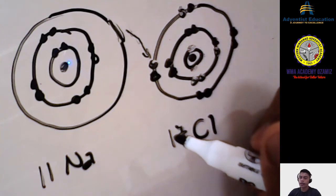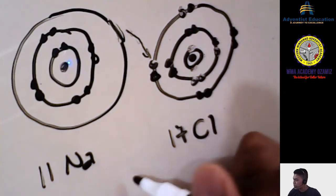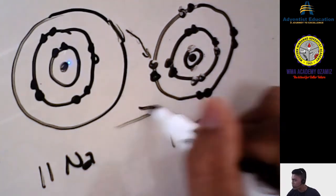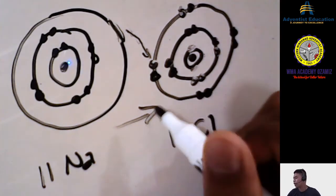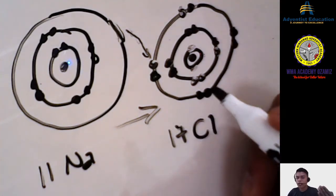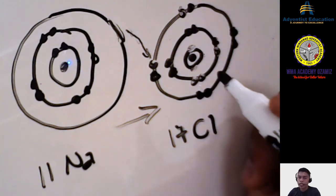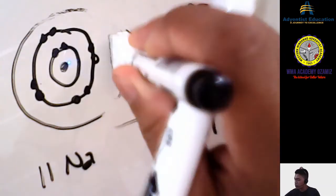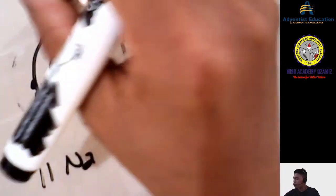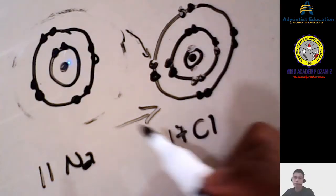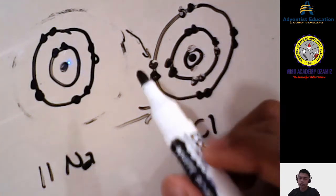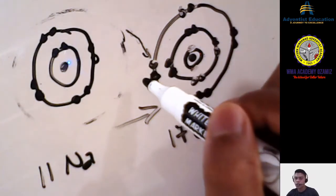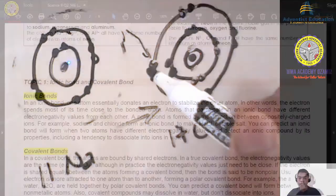In ionic bonding, the element gives its electron. The outer shell of sodium becomes empty after donating the electron. The sodium and chlorine still pair together as a compound, but the electron has been fully transferred — that is the key feature of ionic bonding. The electron is given, not shared.